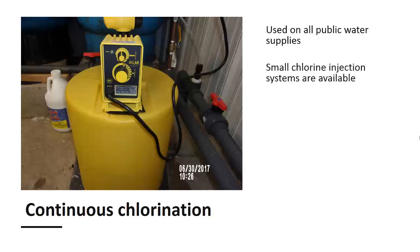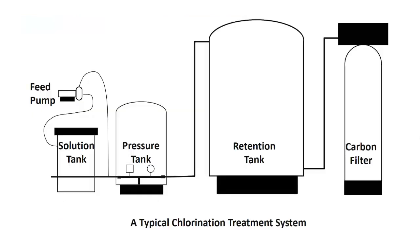Another type of disinfection used in all public water supplies in the United States is continuous chlorination. On household wells and springs, small chlorine injection systems are available. The feed pump injects chlorine from a solution tank before the pressure tank. A larger retention tank is also installed to make sure that the chlorine has plenty of time to kill bacteria before the water moves into the household plumbing. If the resulting chlorine concentration is offensive, a carbon filter can be installed after the retention tank to remove the chlorine after it has done its job.